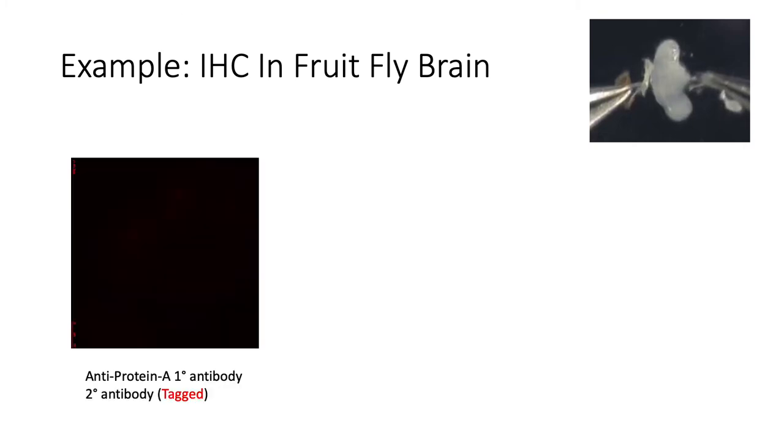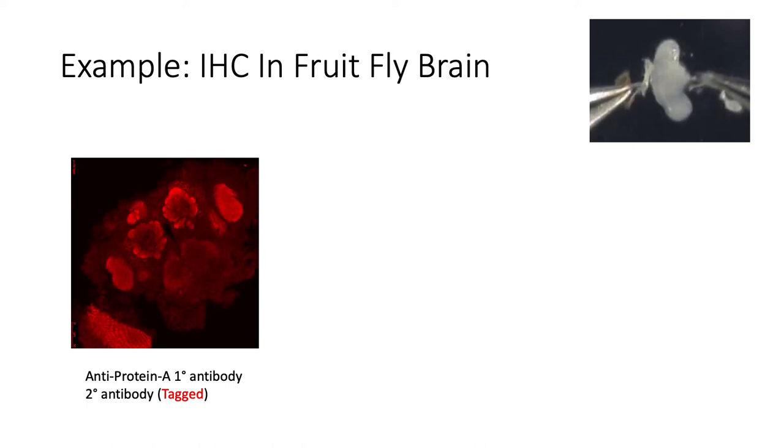First, I'm incubating the brain with a primary antibody that labels a protein present in all cells of the brain. And this primary antibody is targeted by a secondary antibody carrying a tag, a red fluorescent protein. By using this combination of antibodies, I can get a good visualization of the whole morphology of the brain.